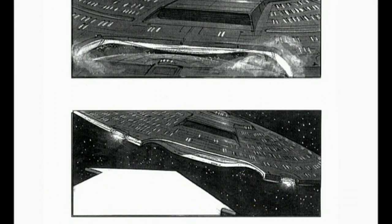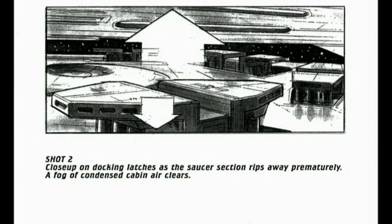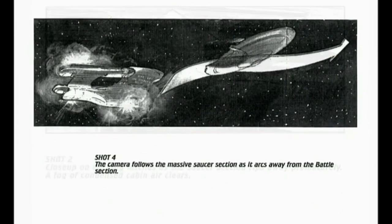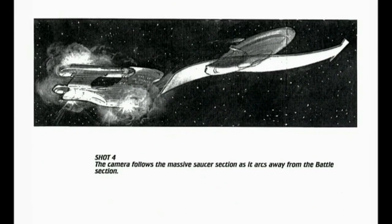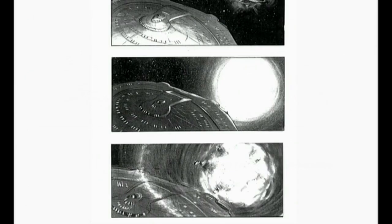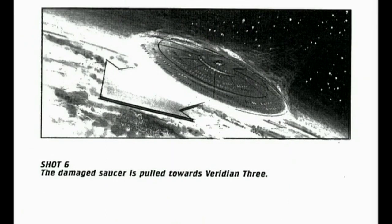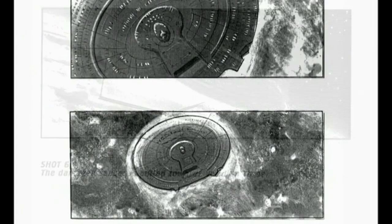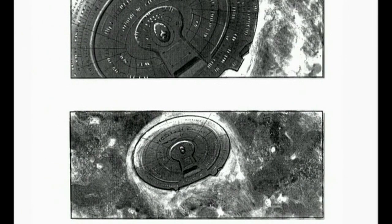What you're looking at right now are the original storyboards for the saucer crash sequence in Star Trek Generations. As you can see, this is where the saucer section separates from the main body of the ship. A warp core breach has forced the evacuation of the crew into the saucer, which escapes the immediate danger but ultimately crashes on a planet. The storyboards shown here represent the original concept of the sequence to be filmed. In the course of refining the movie, these particular scenes were compressed into fewer shots than you see here.